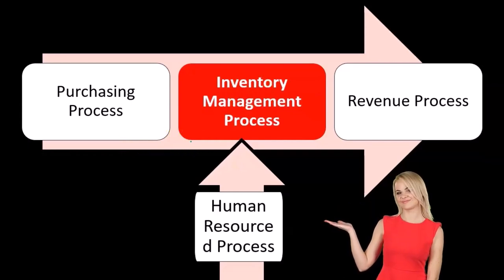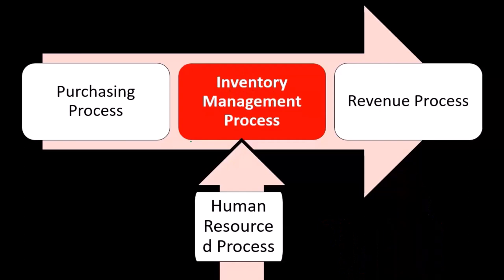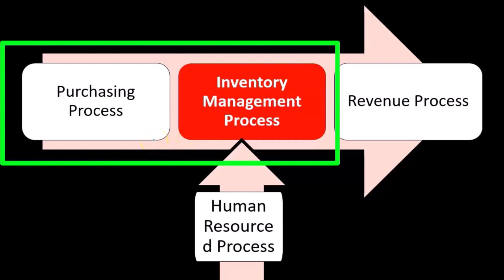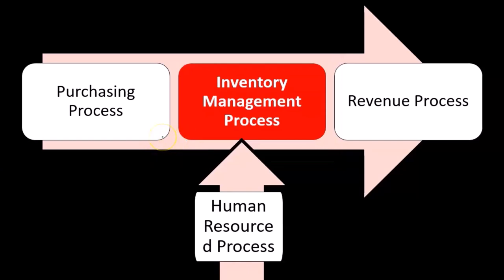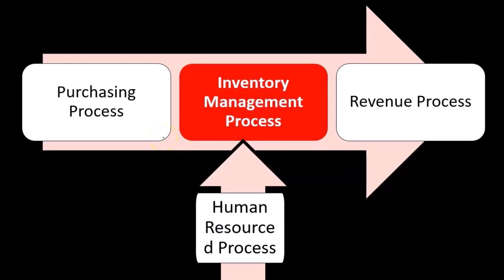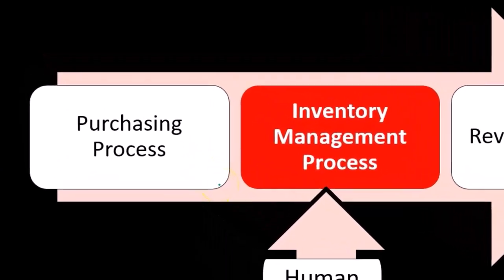How much of that bucket of evidence can we fill up with regards to inventory management as we audit the purchasing process, and the inverse as well? When we go to the inventory management process, how much can we apply out to the purchasing process so we can efficiently plan this information?